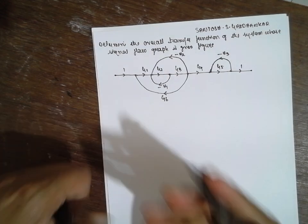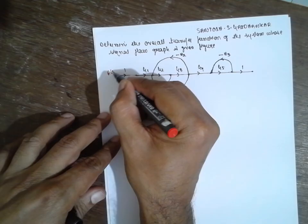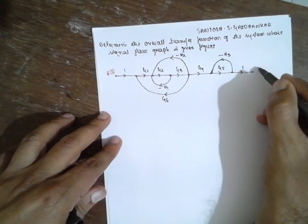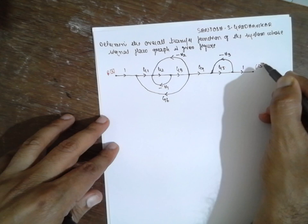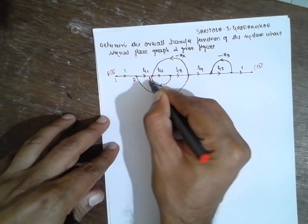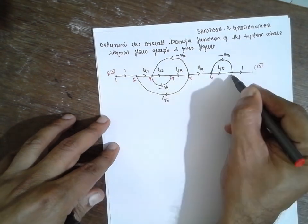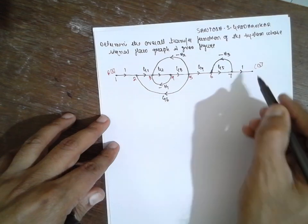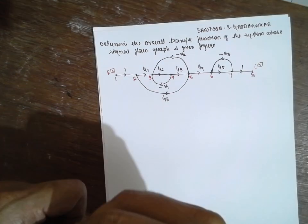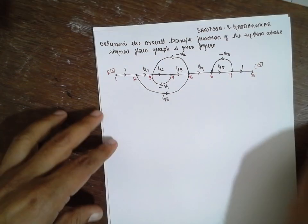First, let's write the node numbers: 1, 2, 3, 4, 5, 6, 7, 8. After writing the numbers, we find the forward path. Let's identify the forward path.